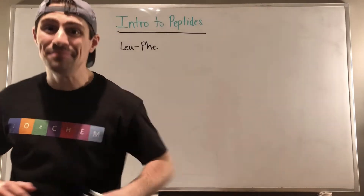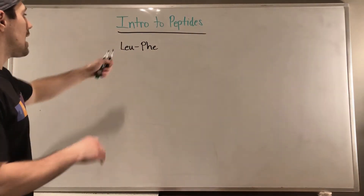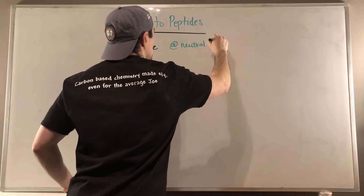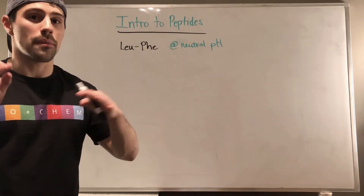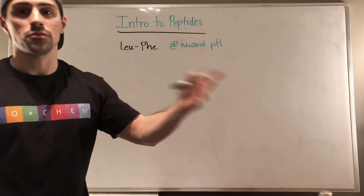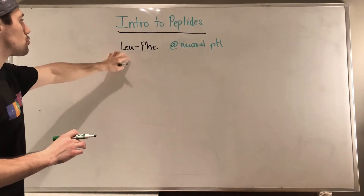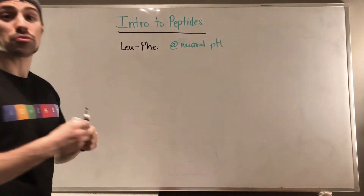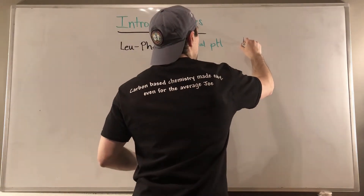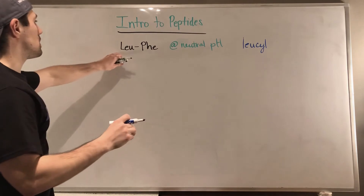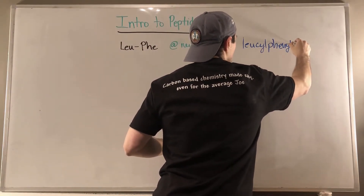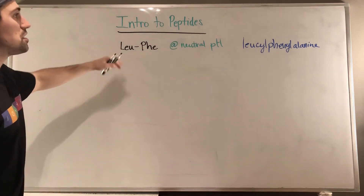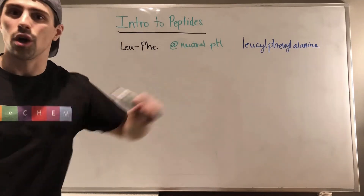If someone gives you something like this on an exam at neutral pH — draw leucine and phenylalanine attached together — you need to name it properly. You would say leucylphenylalanine. You say the last amino acid as-is, but anything before it you modify: drop the -ine and add -yl. So if it were isoleucine before phenylalanine, you'd say isoleucylphenylalanine. Just string it all together.